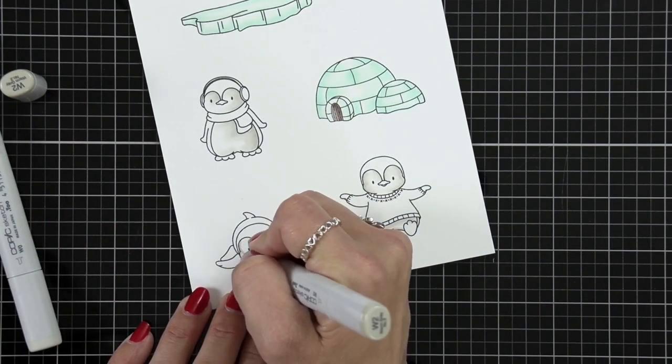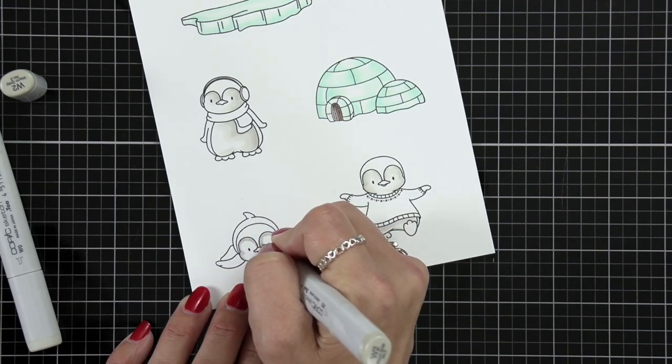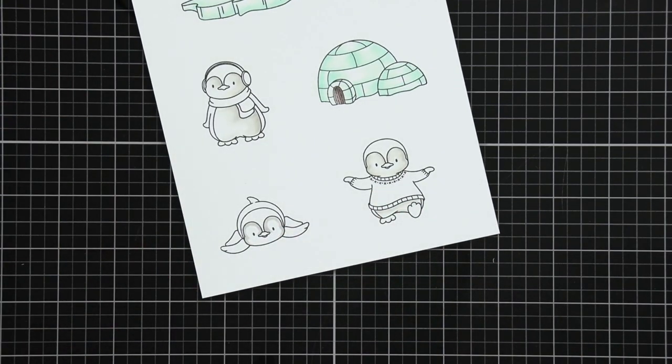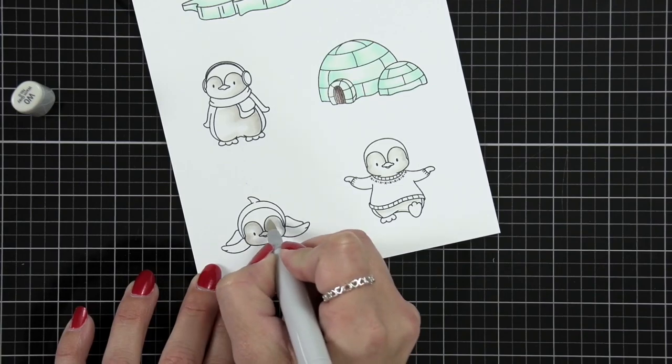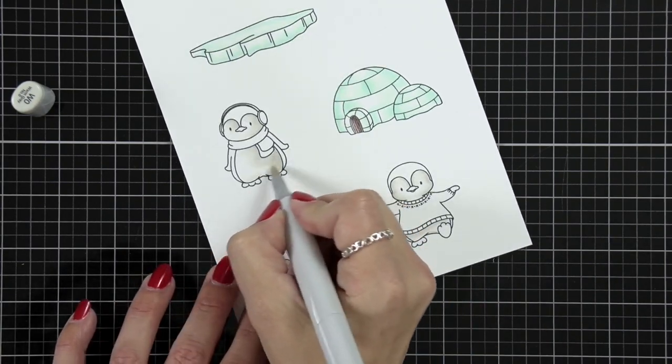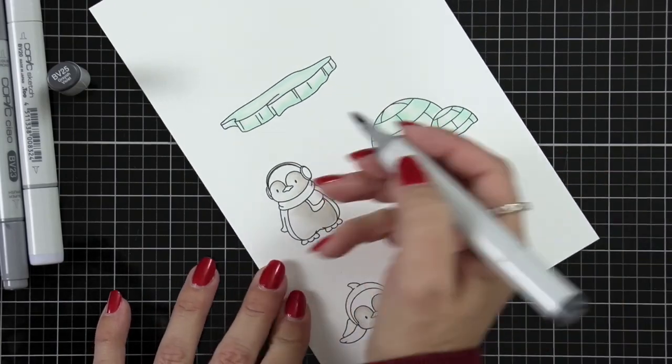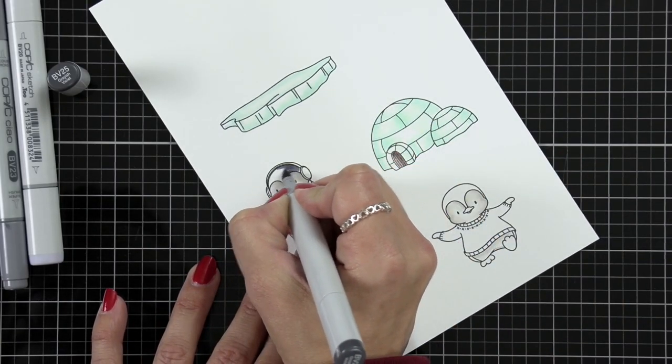You probably could even get away with just using a W0 if you didn't want to have too much of that dark gray in there. And at this point they probably kind of look a little dirty but it'll all come together once I start adding color to the penguins.